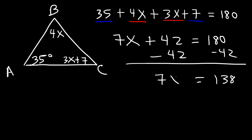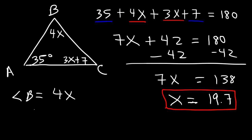180 minus 42 is 138. So 7x is equal to 138. If we divide both sides by 7, x is about 19.7. Now that's the value of x. Our goal is to find the value of angle B. Angle B is equal to 4x. So we got to multiply 19.7 by 4. It's really 19.71 for those of you who want to get a more accurate answer. So if you multiply 19.71 by 4, you should get 78.84. So that's the value of angle B.